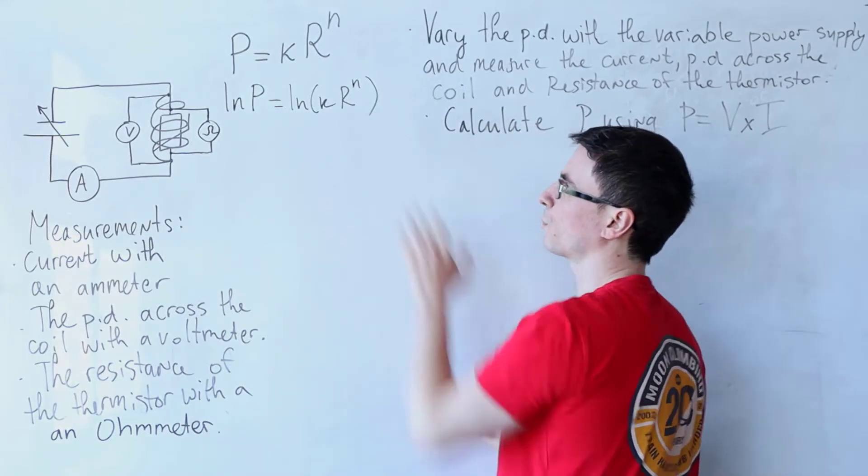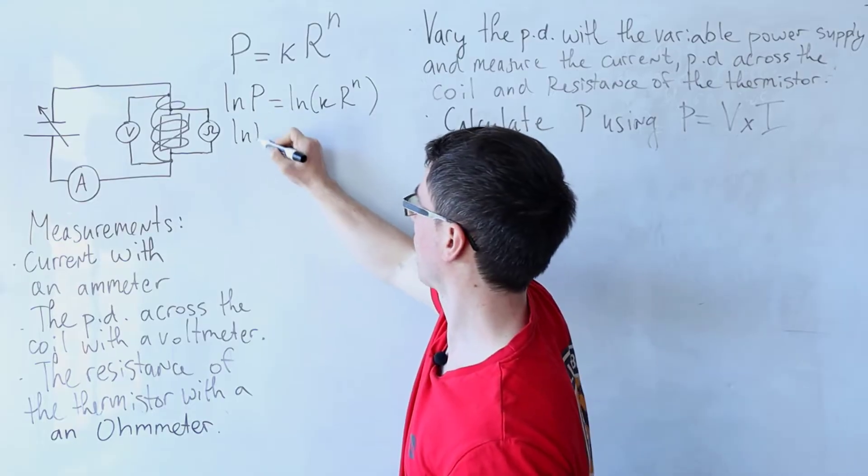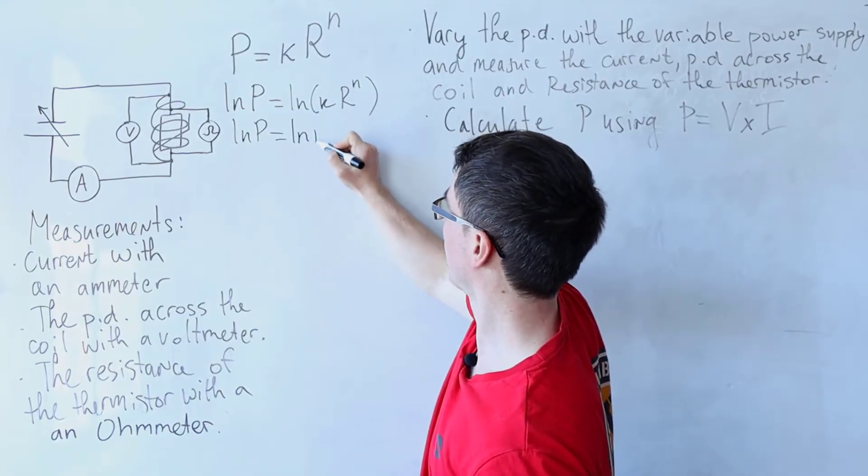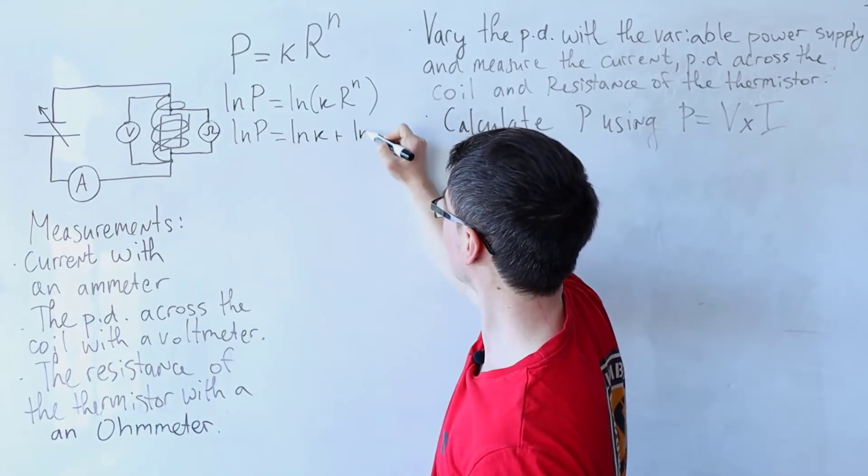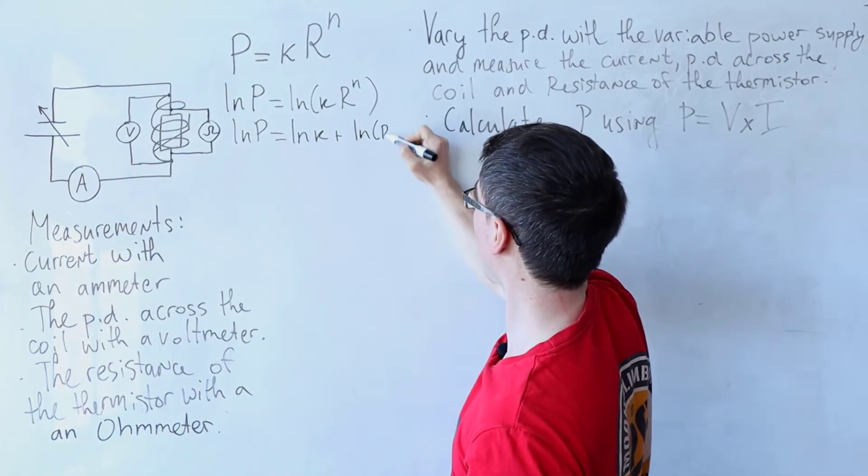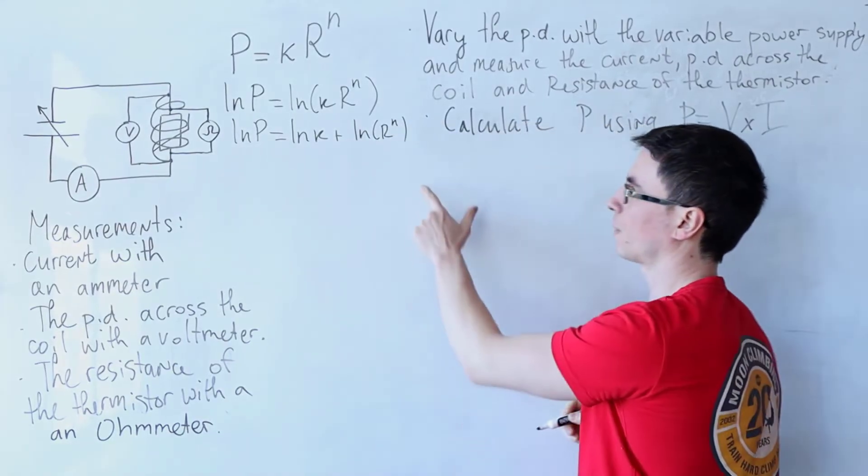And now I'm going to use the product rule for logs, i.e., ln of P will be equal to ln of k plus the ln of R raised to the power of n.